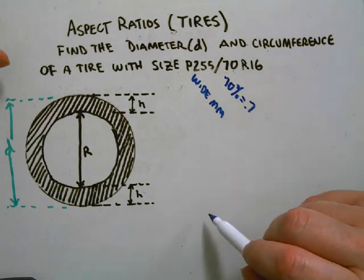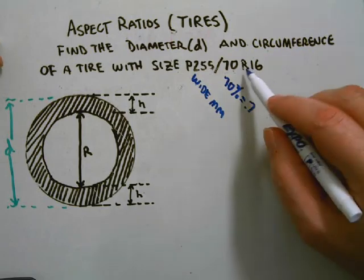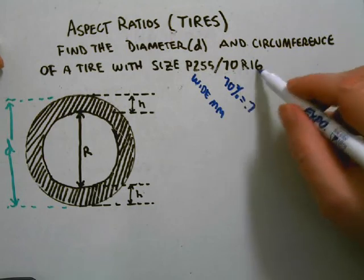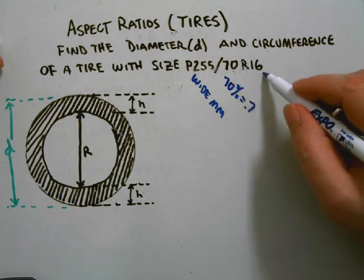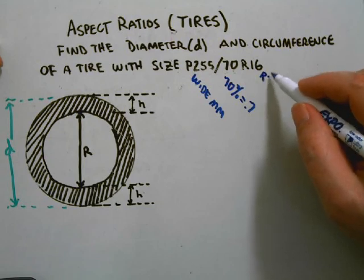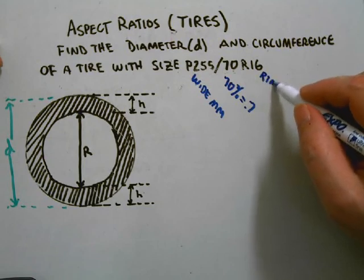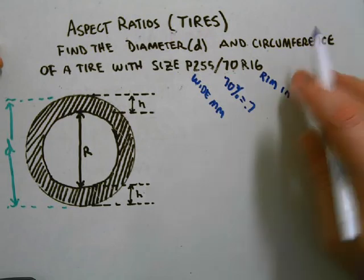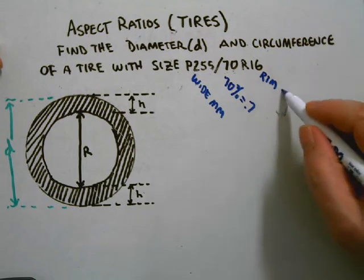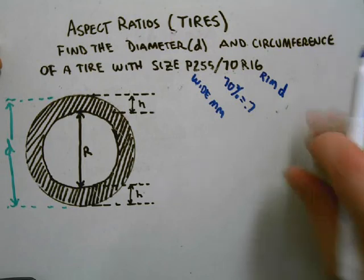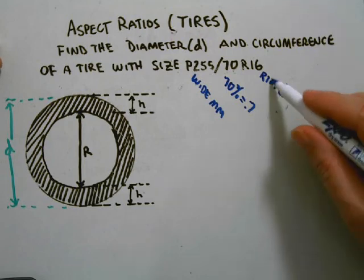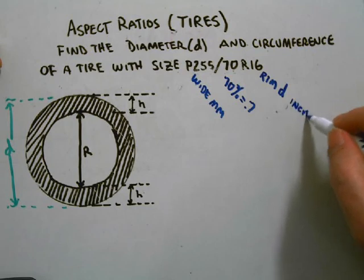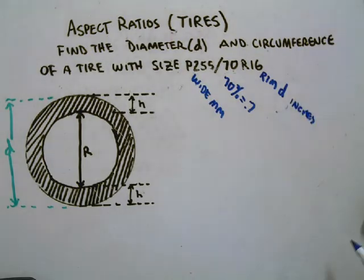And then the last piece we have is the rim diameter. This is the rim diameter and it's in inches. One of the biggest problems with the sizing is that it actually gives millimeters in part of the size and inches in the other.